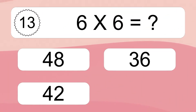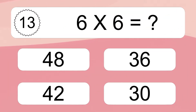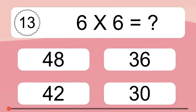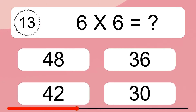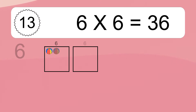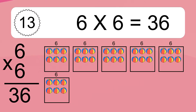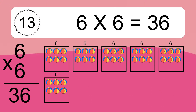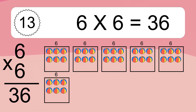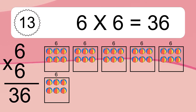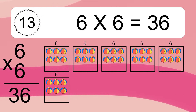6 times 6 equals what? 6 times 6 equals 36. We have 6 boxes, and each box has 6 colorful balls inside. If you count all the balls in all the boxes together, you will have 6 times 6 balls. This equals 36 balls.